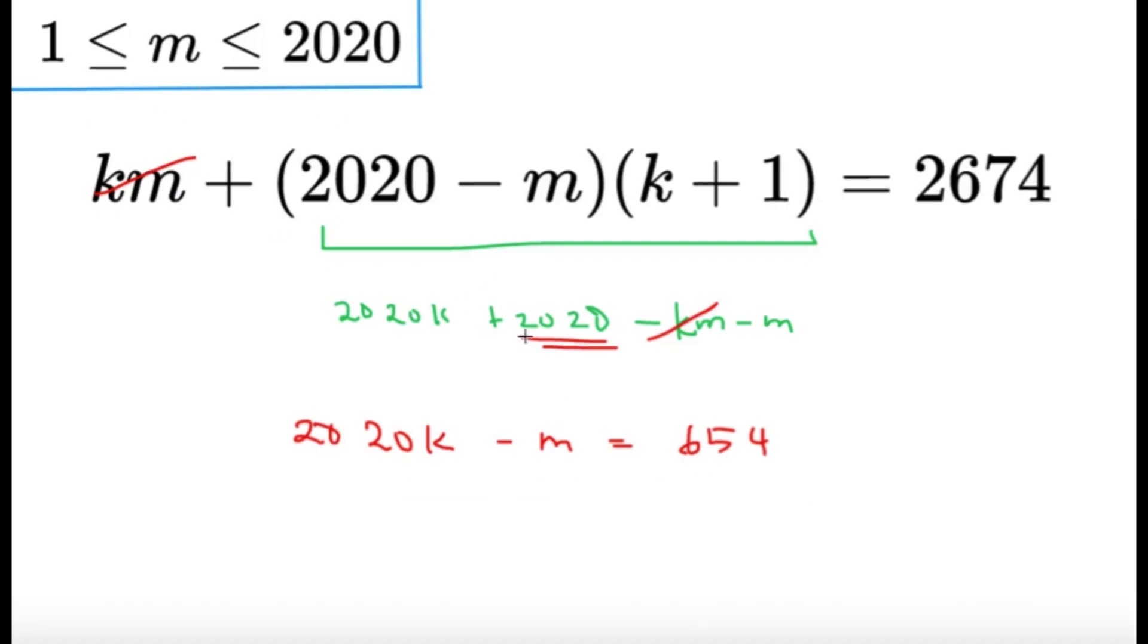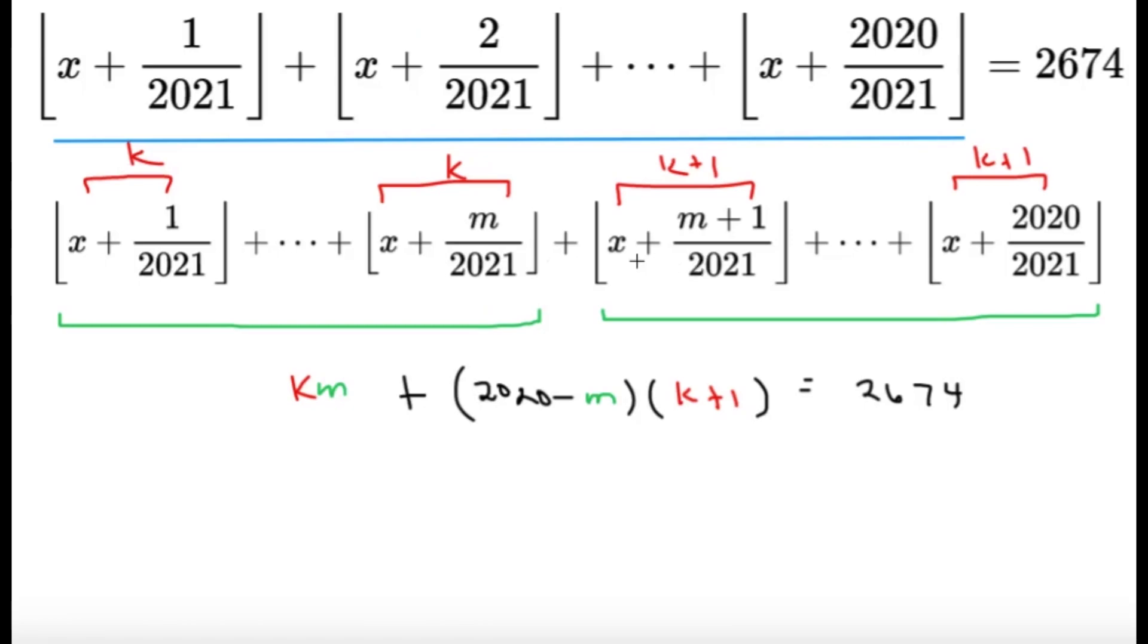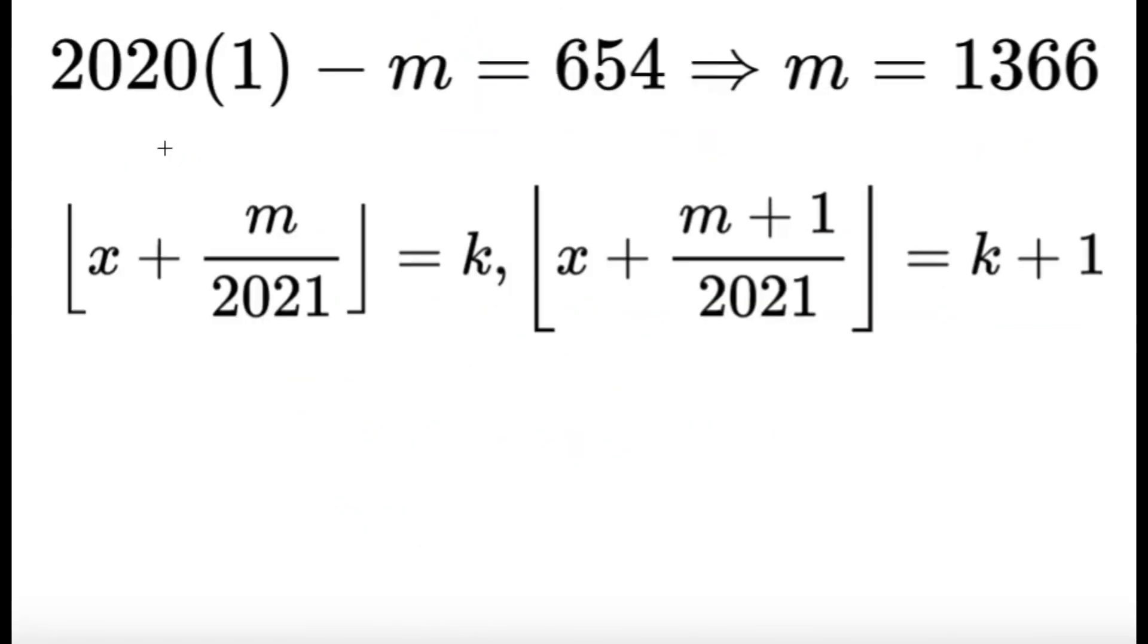Now, we know that m lies between 1 and 2020. So it must be the case that K equals 1. Because, for example, if K was 0, then m would be negative. Now, if K equals 1, m is possible. But if K equals 2, it's going to be 4040 minus m being equal to 654. But m would be 3000-something, so that's impossible. So with this, we know that K here must be equal to 1 so that m would satisfy this, which is the restriction for the way we set up m. So we know that K must equal to 1. So we substitute it here. So K equals 1 and we have to solve for m. So solving for m is just a matter of simple algebra. We're going to get m is 1366.